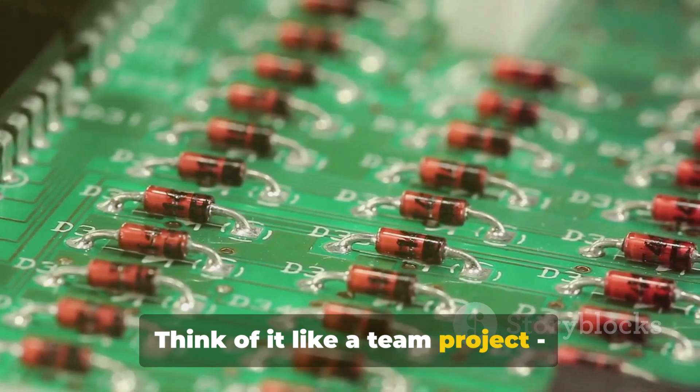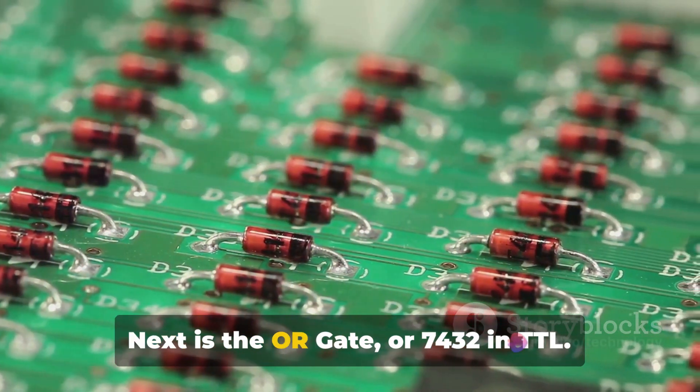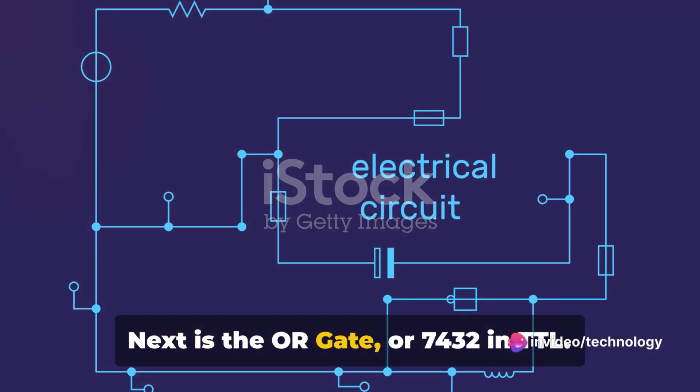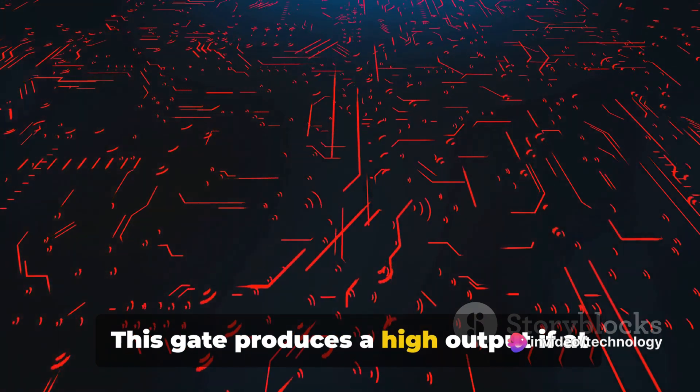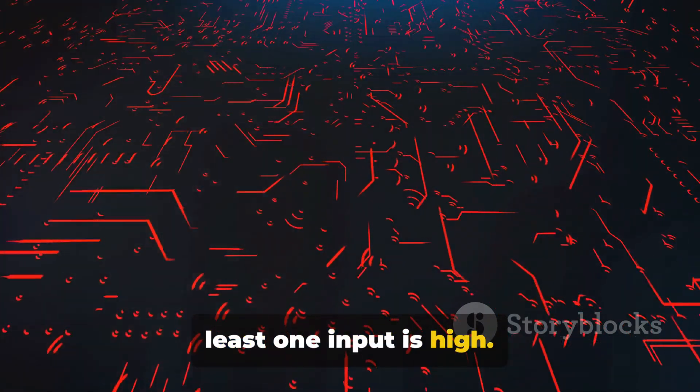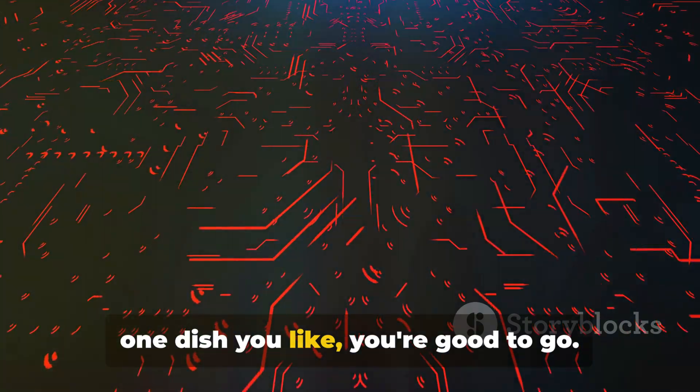Think of it like a team project, everyone needs to contribute their part for the project to succeed. Next is the OR gate, or 7432 in TTL. This gate produces a high output if at least one input is high. It's like a buffet. As long as you have one dish you like, you're good to go.